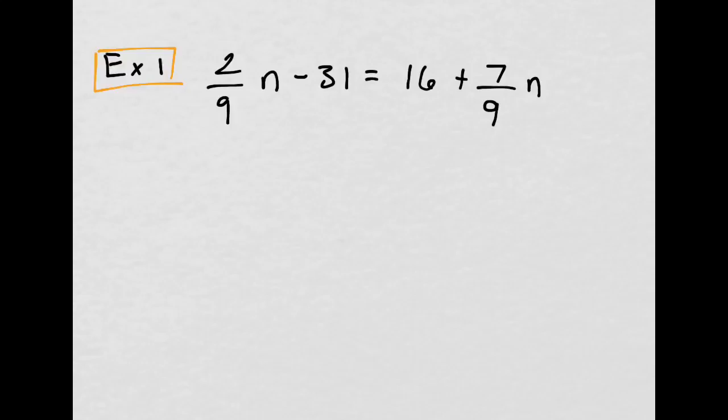So, first thing I see is the denominators of 9, and I think to myself, what's a common denominator? Well, actually, 9 is the common denominator here, so I can multiply everything by that common denominator.